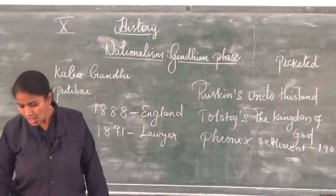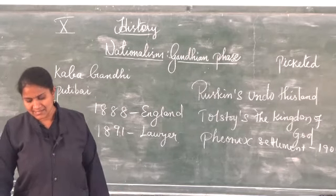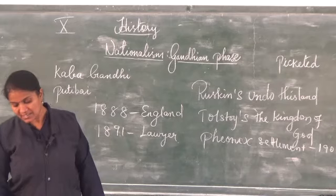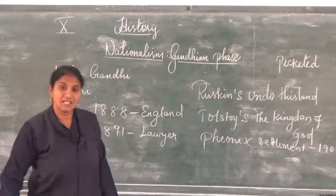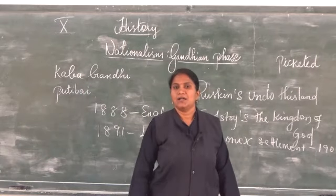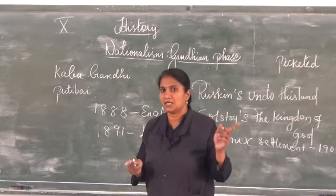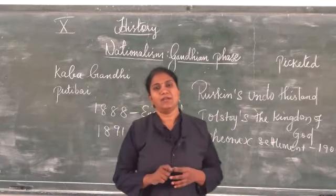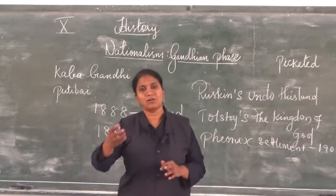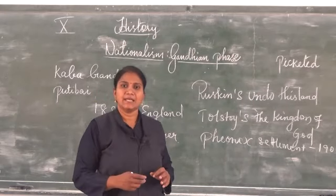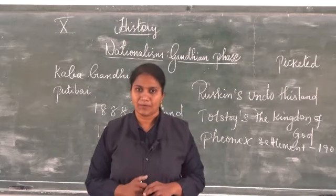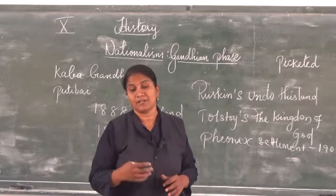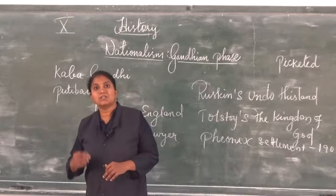Even when the police indulged in violence, the protesters remained calm and quiet. Thus Gandhiji and other leaders were arrested. Indian laborers and hawkers continued the struggle despite police brutality. Finally, by the Smuts-Gandhi agreement, the poll tax was removed and the Indians got their rights. These were the struggles Gandhiji underwent in South Africa, working for the Indians there.